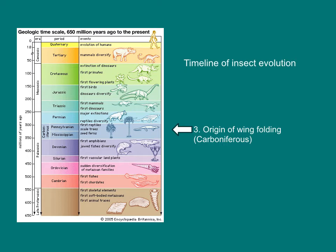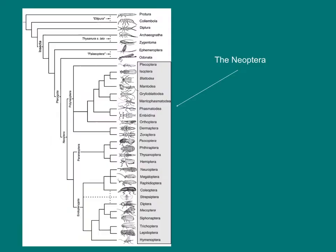The next major event in insect evolution is the origin of wing folding. All the insects we have talked about so far hold their wings out to the side of the body, perpendicular to the long axis of the body. More modern insects have evolved a way to fold their wings over their abdomen. This gives them more mobility and allows them to access habitats that were inaccessible to the Paleozoic insect orders. Neoptera refers to the insects that can fold their wings over the back of their body.